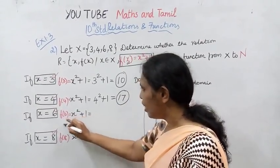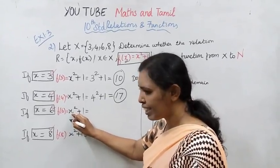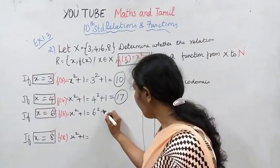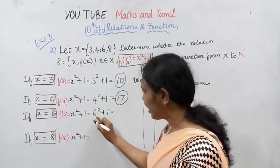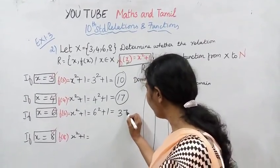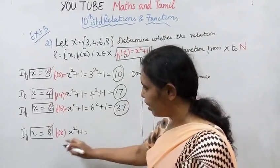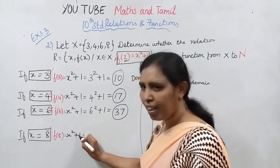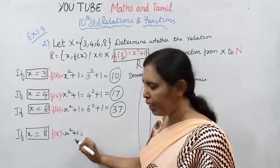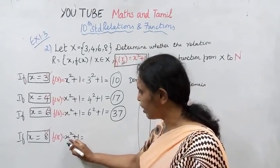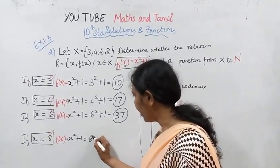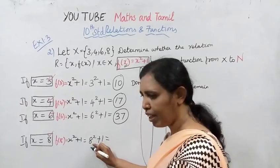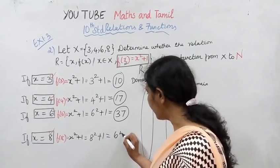Next, for x = 6: f(6) = 6² + 1. 6 sixes are 36, plus 1 = 37. For x = 8: f(8) = 8² + 1. 8 squared is 64, plus 1 = 65.